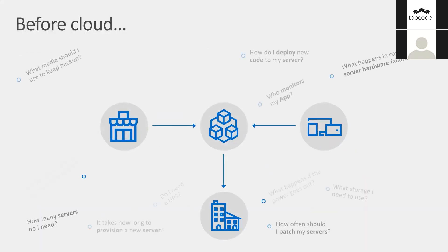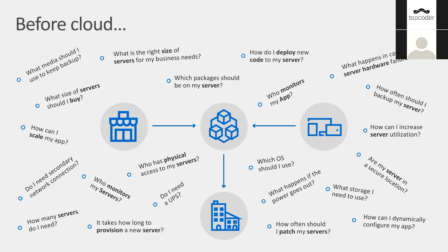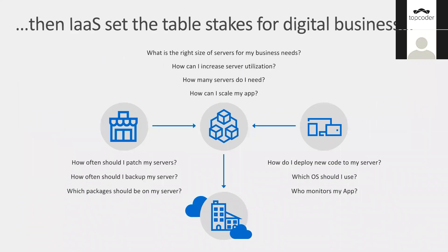Before cloud happened, there were so many problems and challenges: network connections, monitoring your app, patching, physical access to servers, and picking the right size. Cloud changed some of these aspects — with IaaS you're only worried about patching, backups, monitoring, and right-sizing, while physical access and server procurement are handled by the provider.